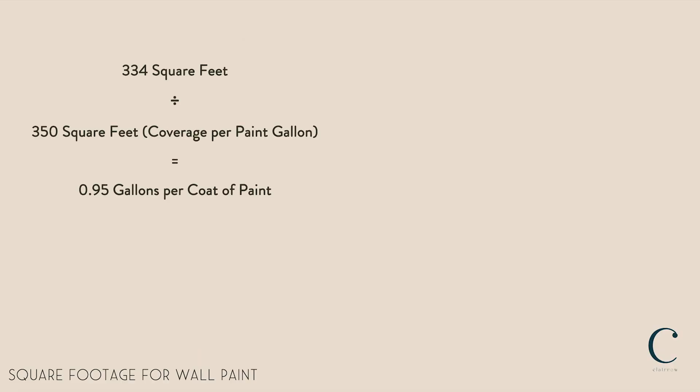A gallon of paint covers about 350 square feet, so in this example we'd only need one gallon of paint for our single coat. Side note though that you usually do need two coats of paint, so for our total project we'd purchase two gallons.